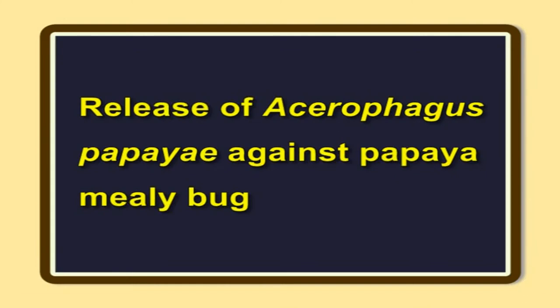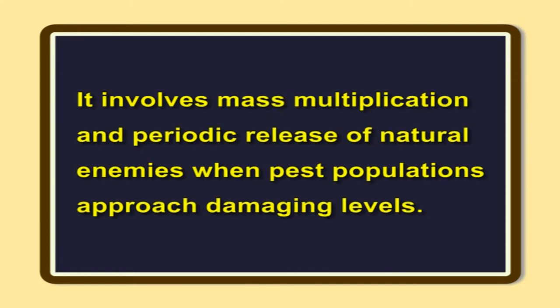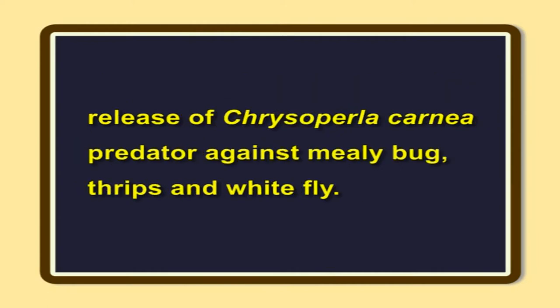Example: release of Acerophagus papayae against papaya mealybug. Inundative releases involve mass multiplication and periodic release of natural enemies when pest populations approach damaging levels. Natural enemies are not expected to reproduce and increase in numbers. Control is achieved through the released individuals, and additional releases are made only when pest populations approach damaging levels. Examples include: release of Scymnus coccivora, predatory beetles, against mealybug; release of Trichogramma chilonis, egg parasitoid, against mulberry leaf roller; and release of Chrysoperla carnea, predator, against mealybug, thrips, and whitefly.